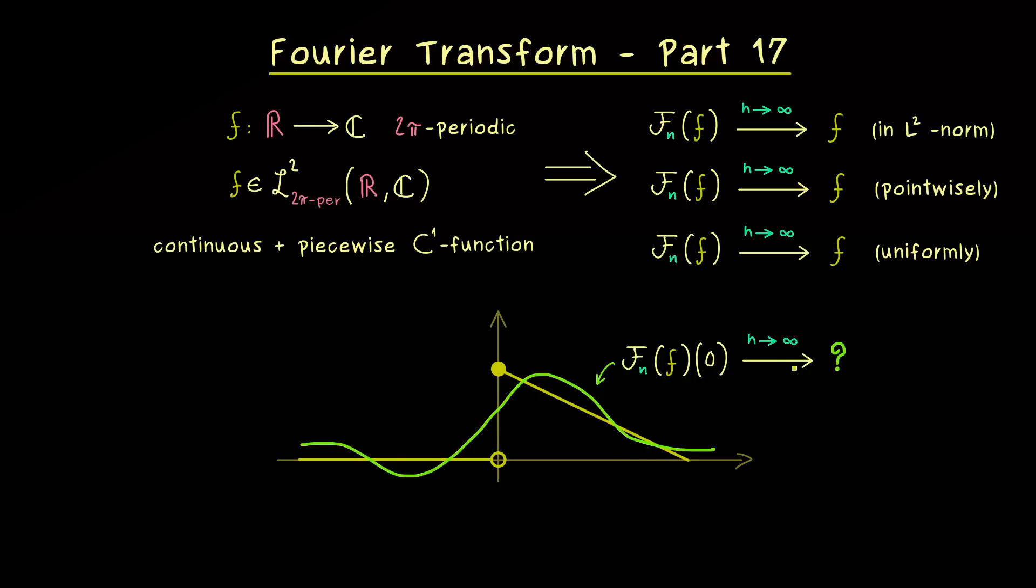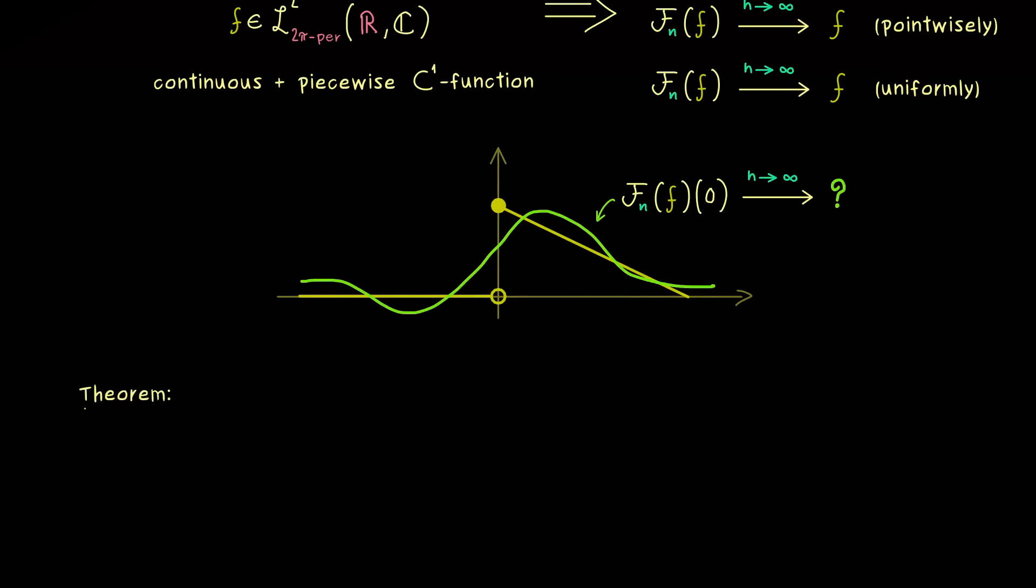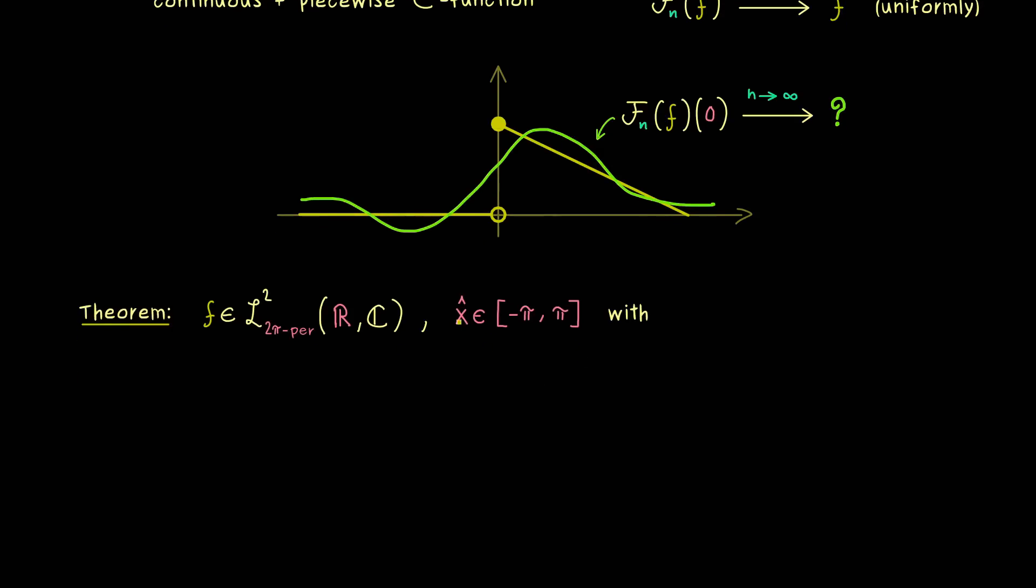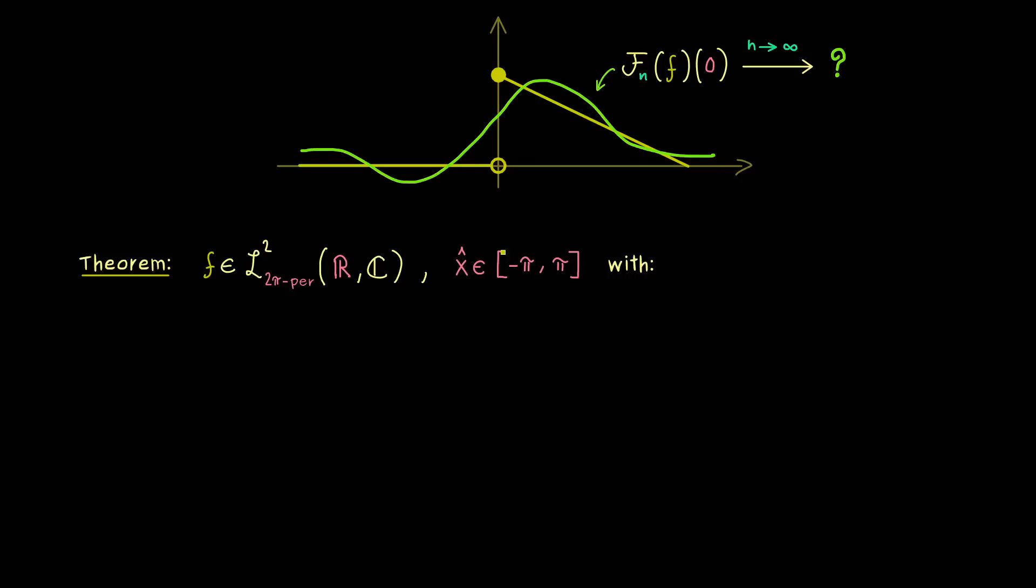It turns out that we can answer that in a very general setting. Roughly speaking, the function f just has to be nice enough at this given point. This means we don't need such a general property for the whole function f, because we can consider each point separately. So let's fix such a point and call it x̂. Since we are 2π-periodic we can take it from the interval [-π, π]. Now our function f has to satisfy four conditions at this given point x̂, and actually they are quite simple. The first one just tells us that the limit coming from the left-hand side exists. So we can write that as limit ε going to 0, where ε has to stay positive, of f(x̂ - ε). It does not matter which value we get; the only important thing is that this limit exists.